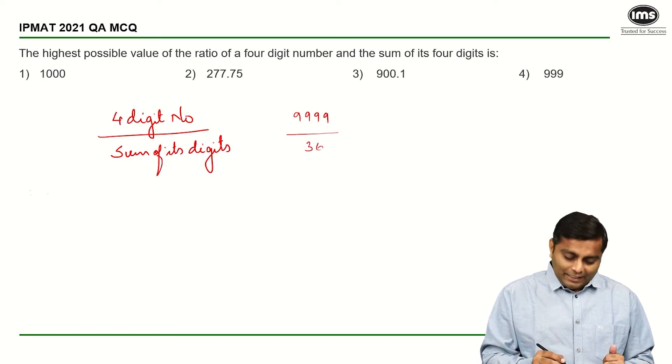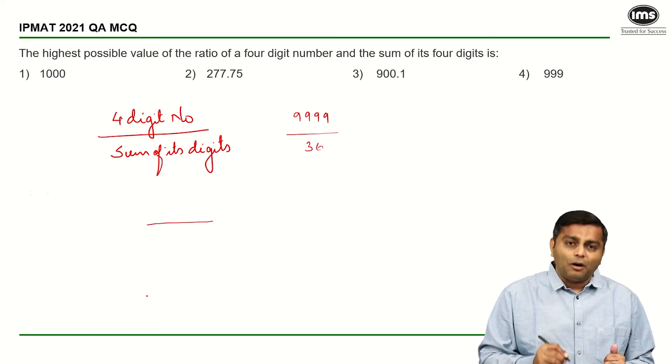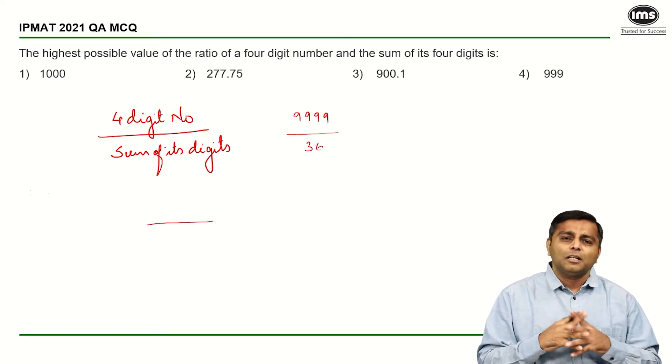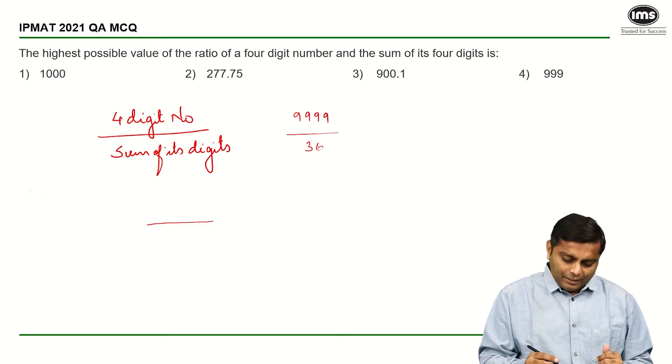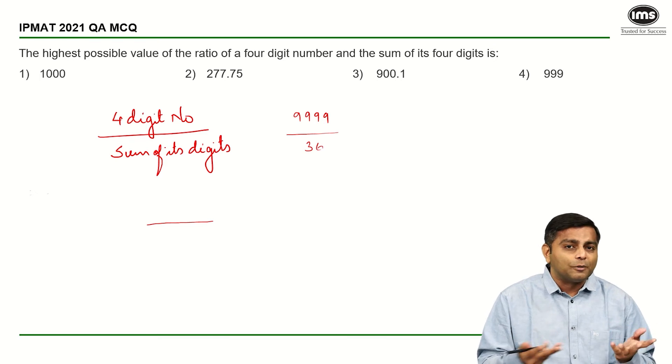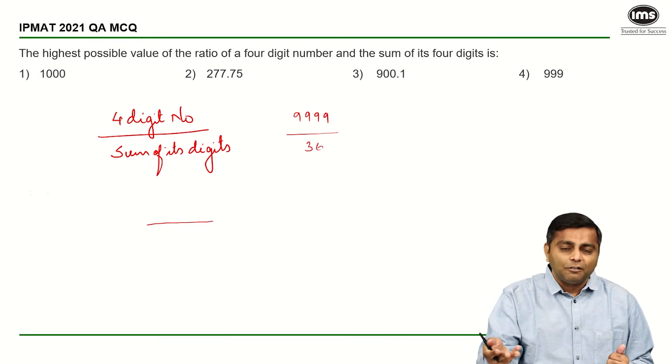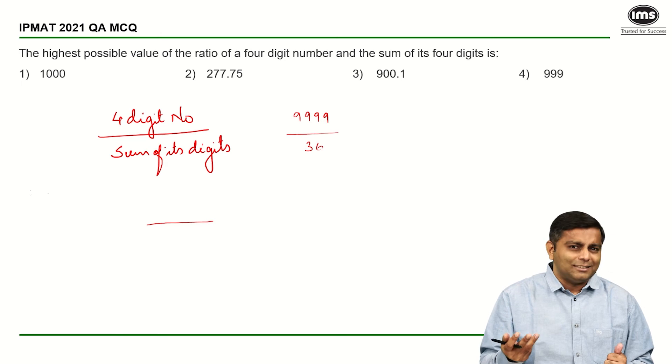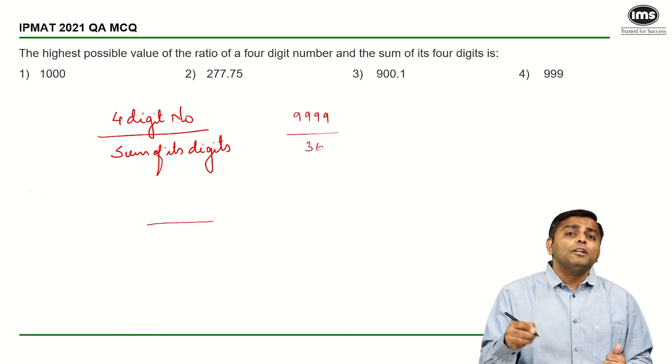So the lowest possible sum will be if I have two zeros, three zeros, four zeros - I cannot have four zeros because then the number itself will be zero. So I can have a maximum of three zeros. Those will not contribute.